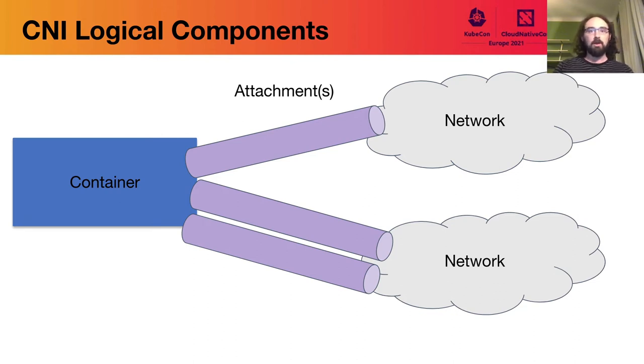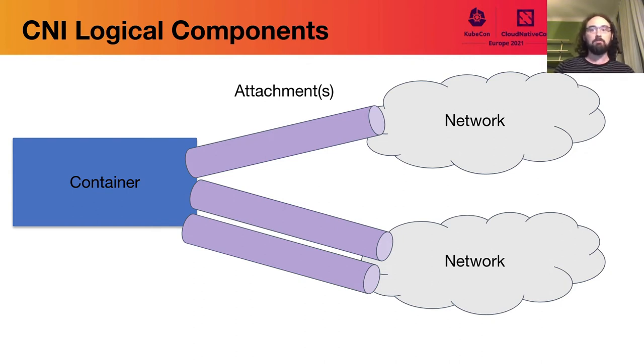The CNI model allows for multiple attachments in a single container, multiple networks, and even multiple attachments of the same container to the same network. As an aside, the fact that Kubernetes only understands a single attachment is a limitation or decision within Kubernetes itself. Other CNI runtimes such as Podman natively support multiple interfaces, and CNI works with them in this regard.